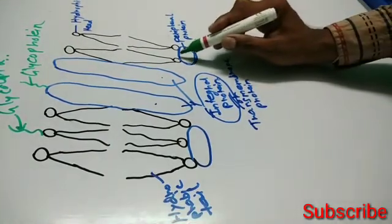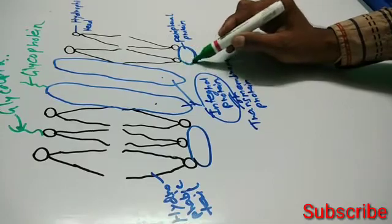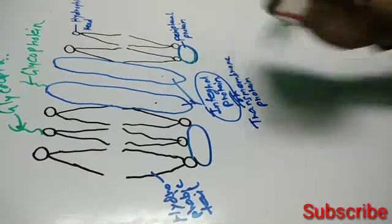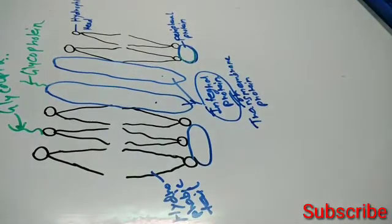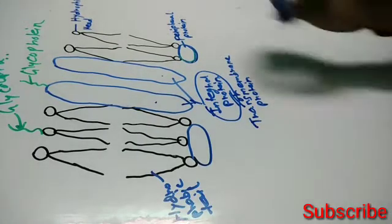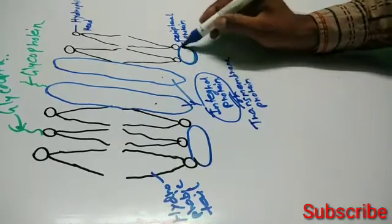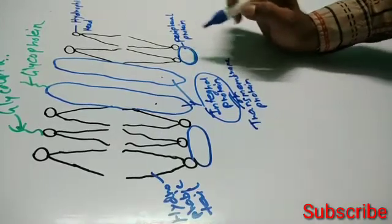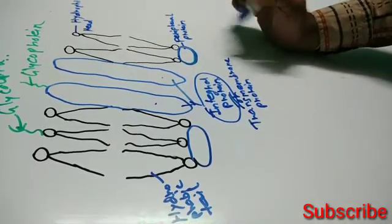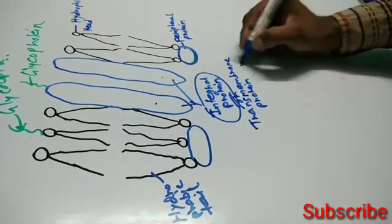It is called the fluid mosaic model because proteins are arranged like a mosaic in the lipid bilayer.